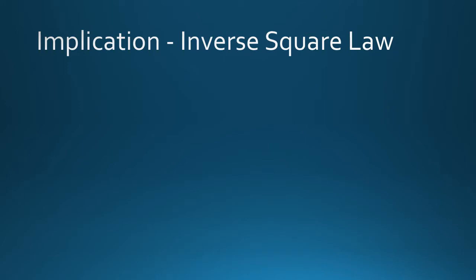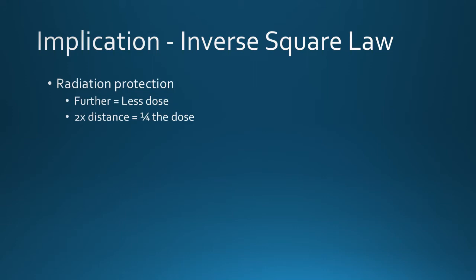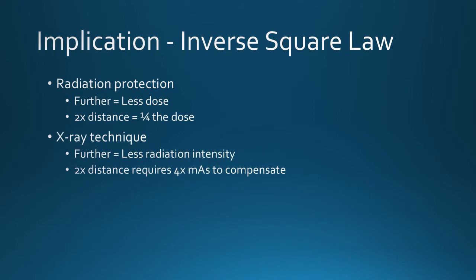This means that a very effective way to reduce radiation exposure is to move away from the source of radiation. Every time you double the distance, your exposure drops by a factor of four times. From the standpoint of x-ray technique, if you increase the source-to-image distance, you'll need to increase the MAS by a factor of four times to compensate for the loss of radiation intensity.